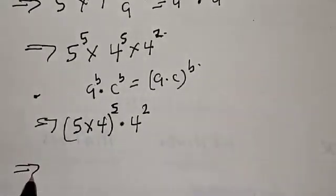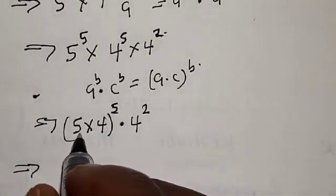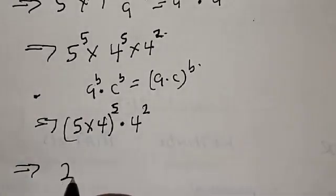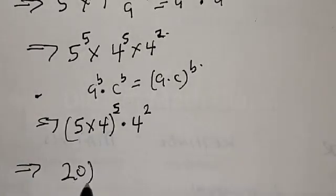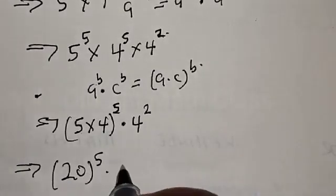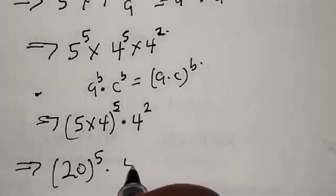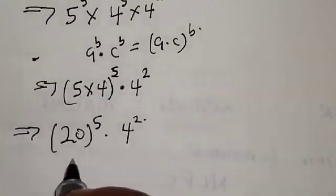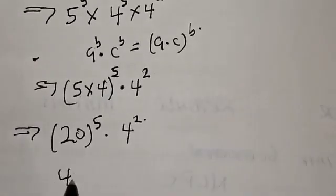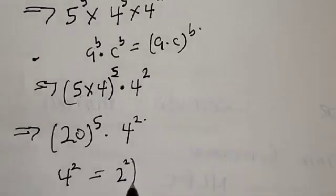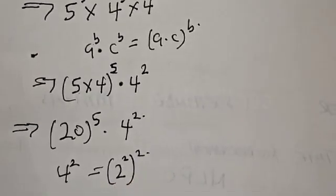This implies that 5 times 4 is 20, so we have 20 raised to power 5 multiplied by 4 squared. And 4 squared can be expressed as 2 raised to power 2, squared — that is, 2 raised to power 4.